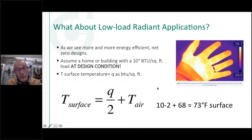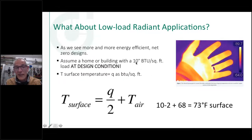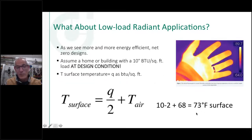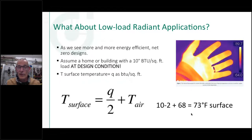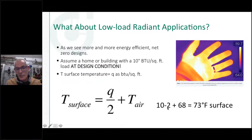In new high-performance homes — green certified or LEED certified — heat loads can get down to single-digit BTUs per square foot on a design day. To deliver that kind of heat energy you'll need a very low water temperature. At 10 BTU/sq ft load with 68-degree ambient, the surface temperature works out to about 73 degrees — not what most customers would call a 'warm floor.' They'll walk in and say the floors feel cool even though the heating system is covering the load. The math to calculate supply water temperature for a given load is right there once you know the ambient air temperature.